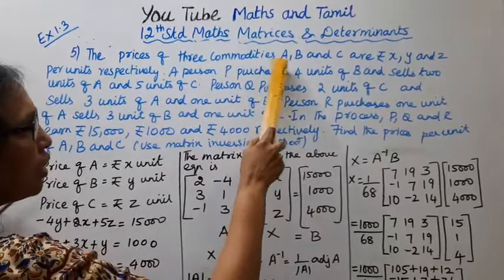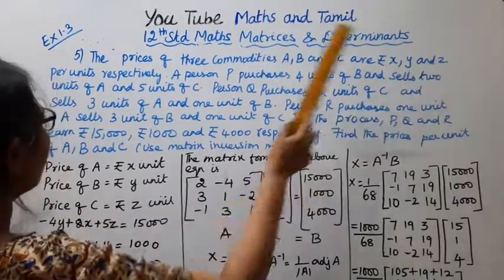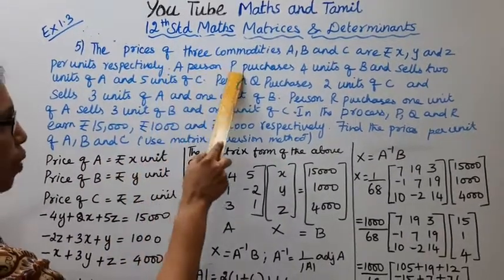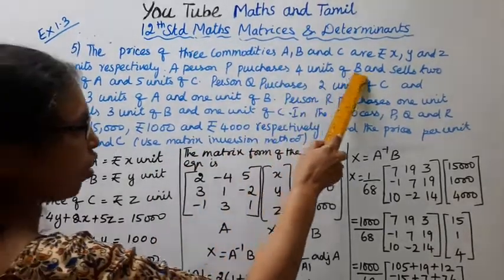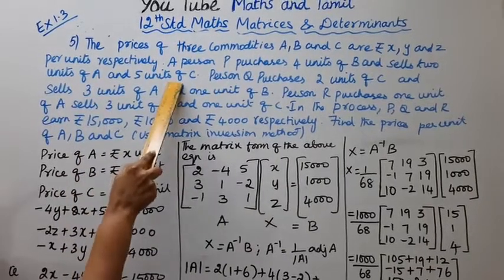Three commodities A, B, and C are rupees X, rupees Y, rupees Z per units respectively. A person P purchases 4 units of B and sells 2 units of A and 5 units of C.